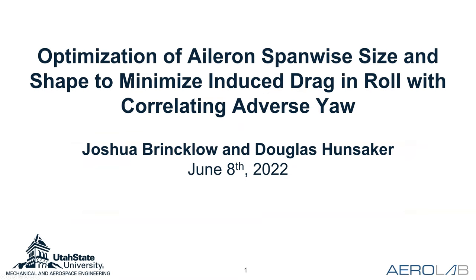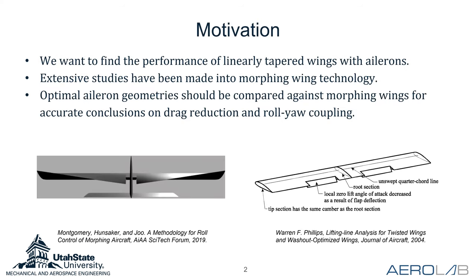Our focus is finding out the performance of ailerons and induced drag in comparison to morphing wings — in other words, what's the best that ailerons can offer? A researcher named Feifel studied this for elliptical wings back in 1980, but we want to broaden the scope by considering linearly tapered wings and find the optimal aileron geometry for minimizing induced drag. To assess optimal morphing wings accurately, we must compare them to optimal discrete control surfaces.